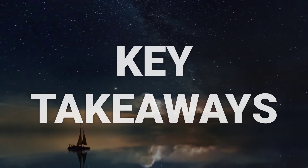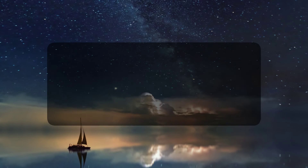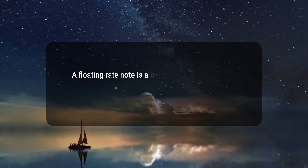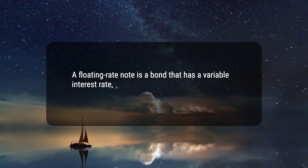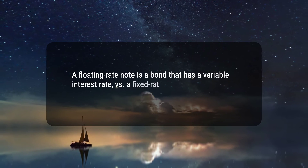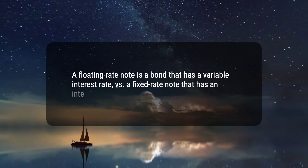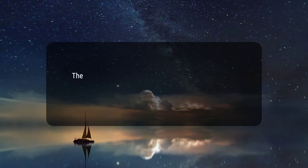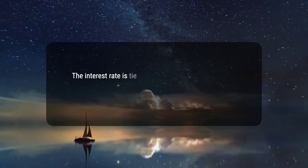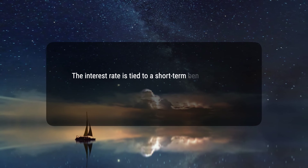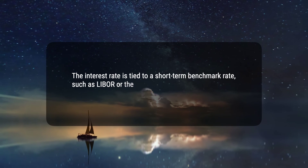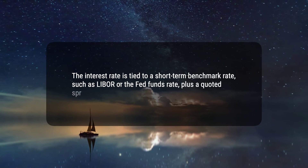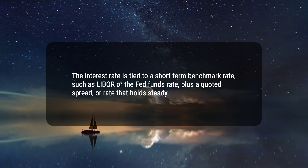Here are four key takeaways. 1. A floating rate note is a bond that has a variable interest rate, versus a fixed rate note that has an interest rate that doesn't fluctuate. 2. The interest rate is tied to a short-term benchmark rate, such as LIBOR or the Fed Funds rate, plus a quoted spread or rate that holds steady.